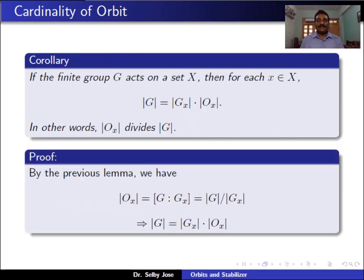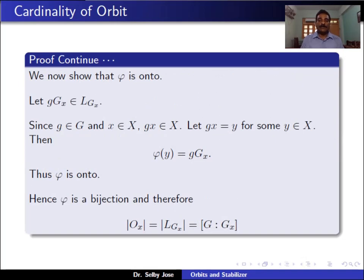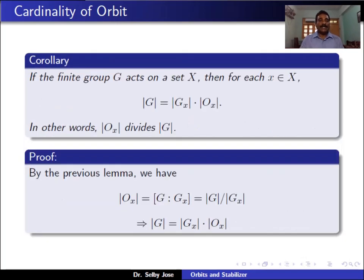Note that G_x, the stabilizer of x, may not be a normal subgroup of G. Therefore G mod G_x is just a set of cosets, and we have not placed any group structure on O(x), so O(x) is not a group and φ is not a group homomorphism. But still, we have the following: if a finite group G acts on a set X, then the order of G equals the order of G_x times the number of elements in O(x). In other words, the number of elements in O(x) divides the order of G. This follows because O(x) equals the index of G_x in G, which equals the order of G divided by the order of G_x, implying by cross-multiplication that the order of G equals the order of G_x times the number of elements in O(x). So the cardinality of O(x) divides the order of the group.